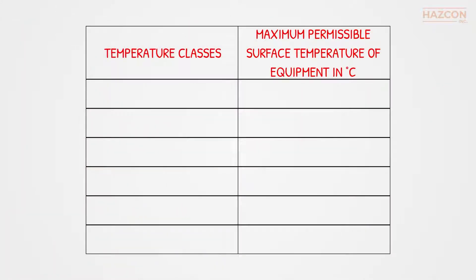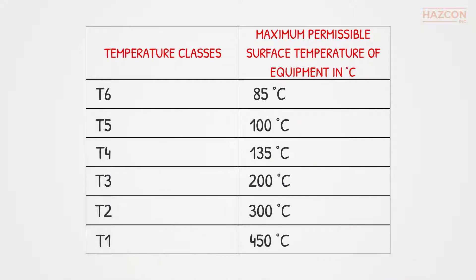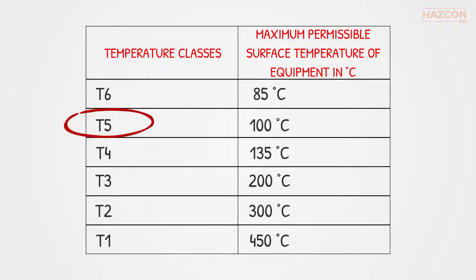There are six main temperature classes named as T6, T5, T4, T3, T2, and T1. What this table means is that a device classified as T5 will never attain a surface temperature higher than 100 degrees Celsius, which can be exposed to explosive atmospheres and cause an explosion.